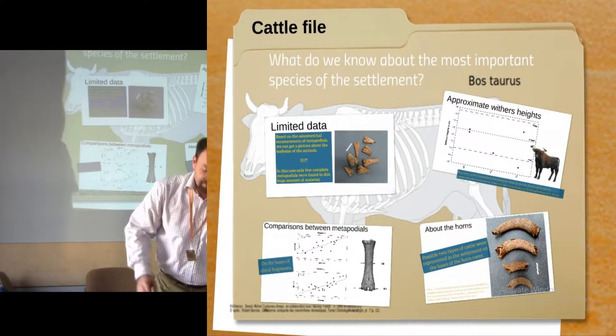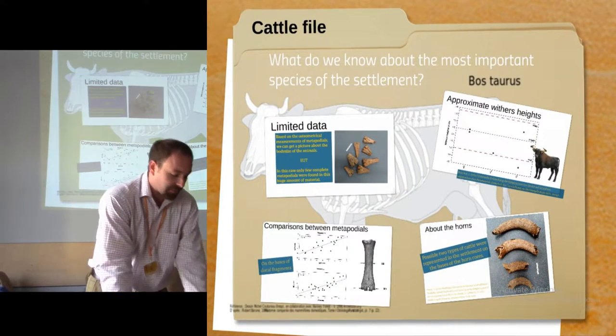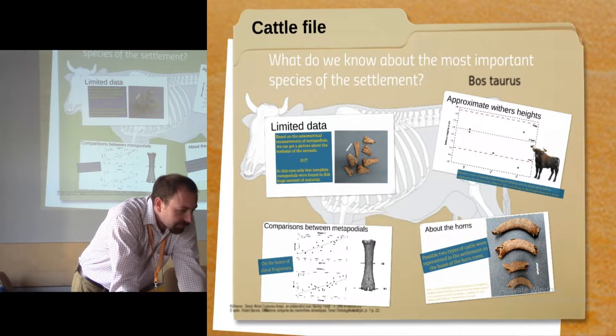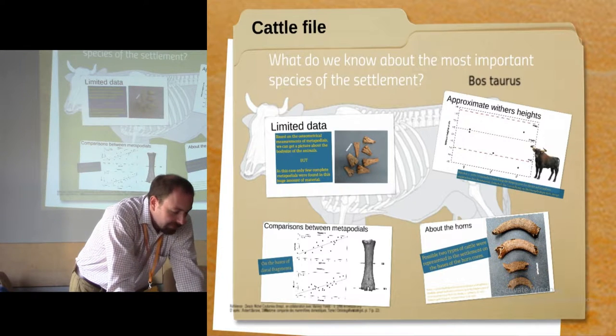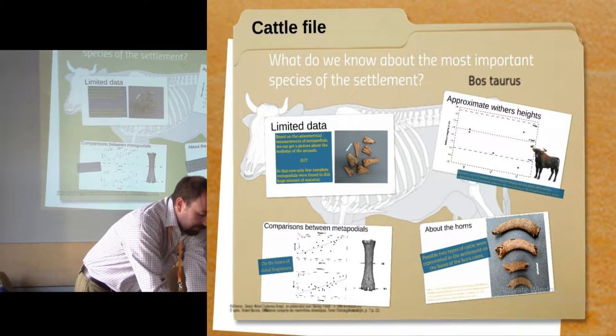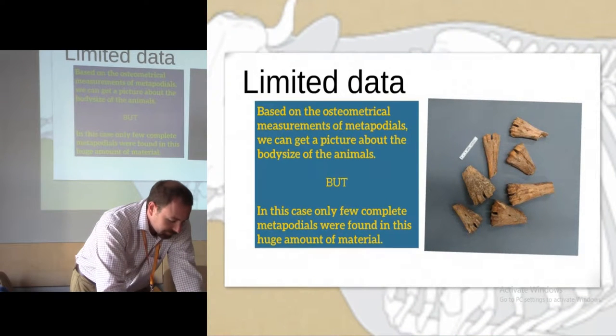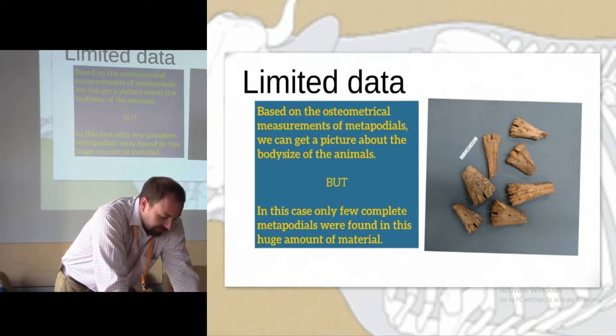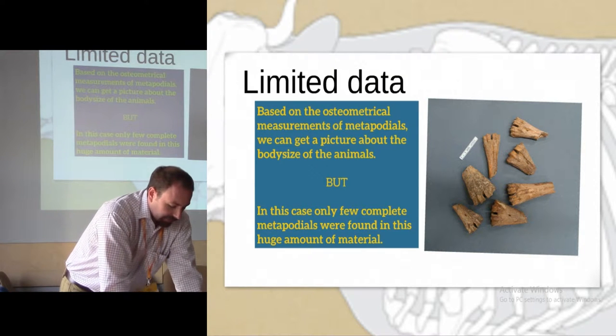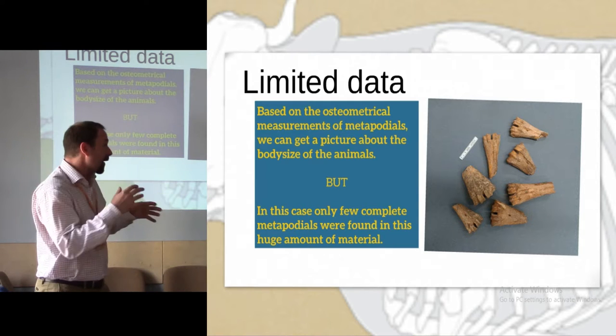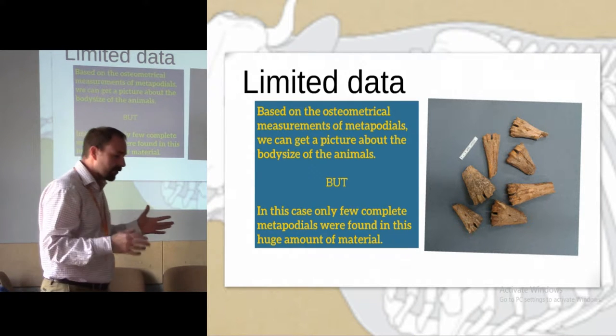But now let's speak about cattle, the most important species of the late Neolithic settlement. What do we know about this animal species on the basis of the bones? Usually, in osteometric studies, the morphological identification of different cattle types is based on metapodial measurements and skull formations.